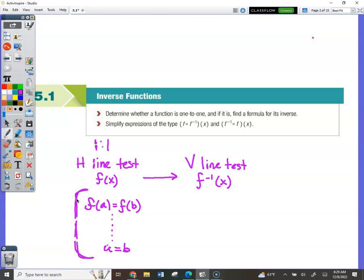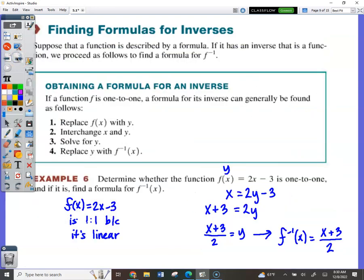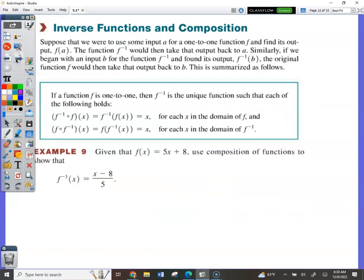This is the algebra behind a function being 1-to-1. You plug a in and you plug b in and you just manipulate it to end up with a equals b. So if a function passes the horizontal line test, this should work out to be a equals b. We also learned how to find the inverse function and that's simply switching the x and the y coordinates and solving for y.